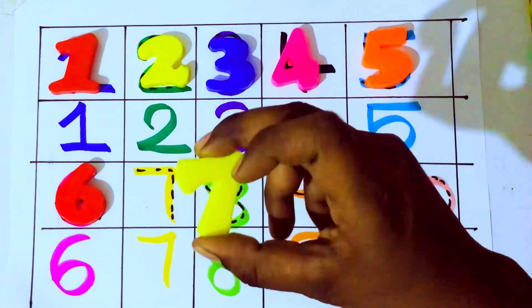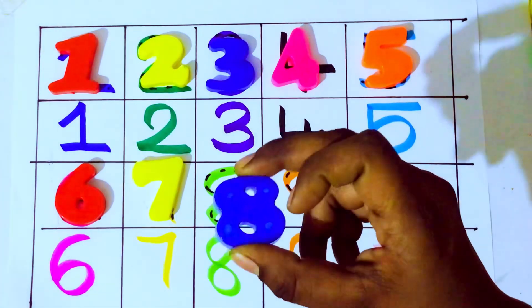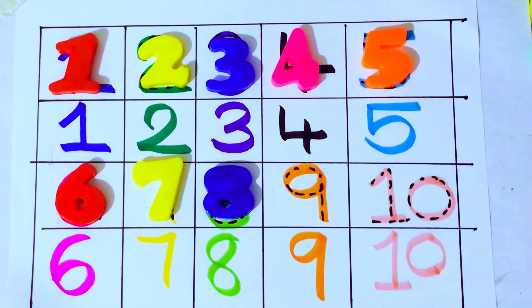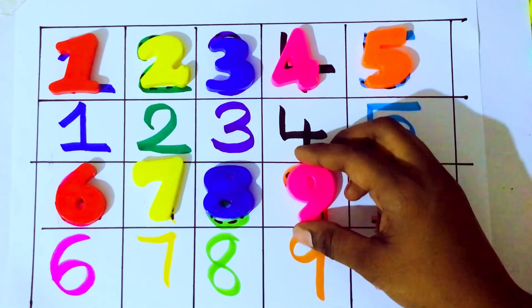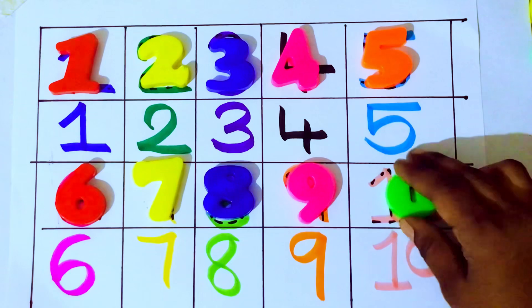6 after 7. S-E-V-E-N. 7. 7 after 8. E-I-G-H-T. 8. 8 after 9. N-I-N-E. 9. 9 after 0. Z-E-R-O. 0. Okay.